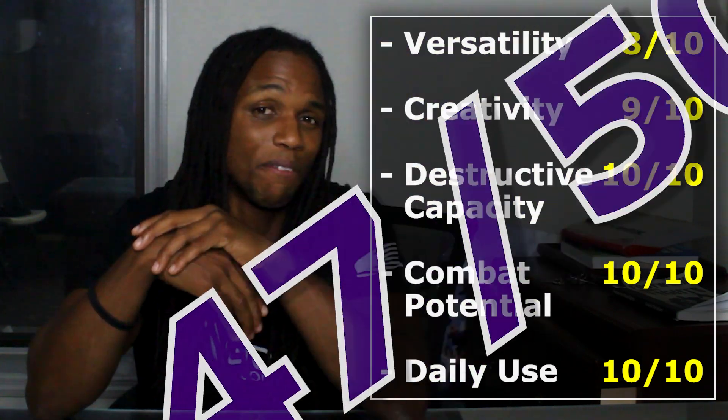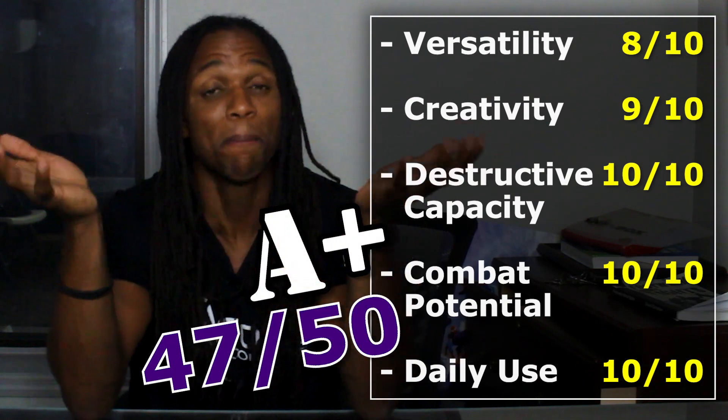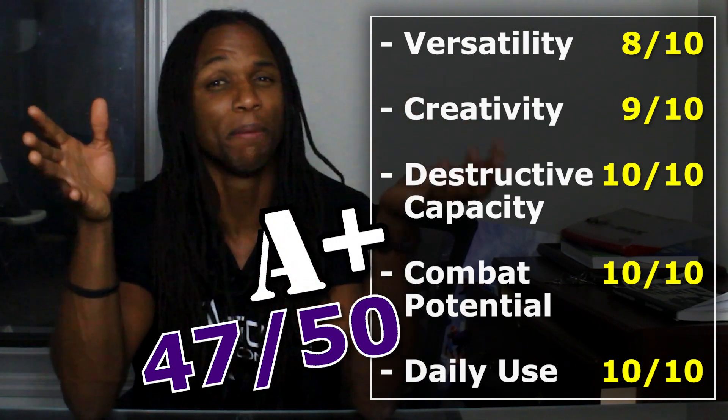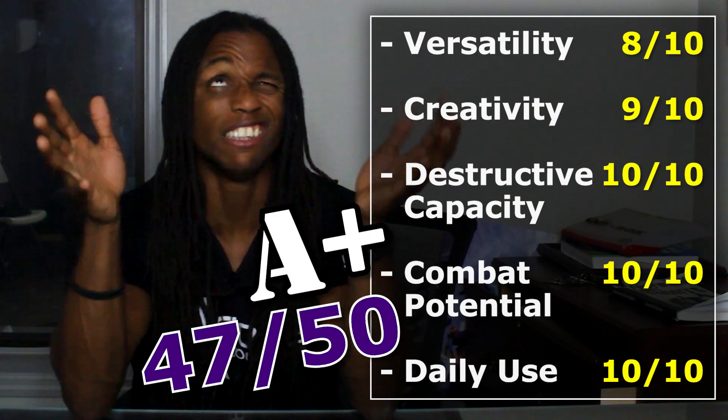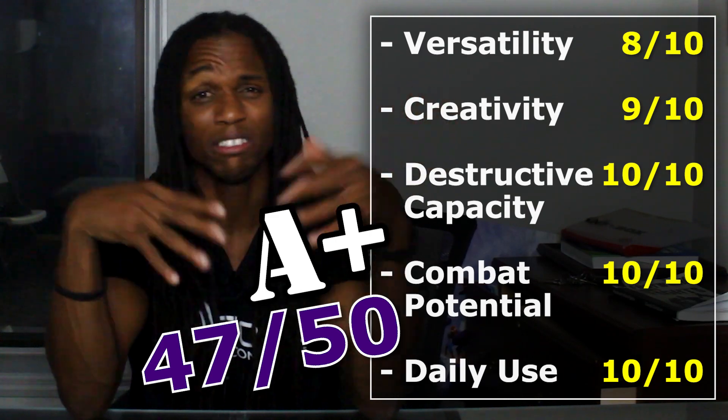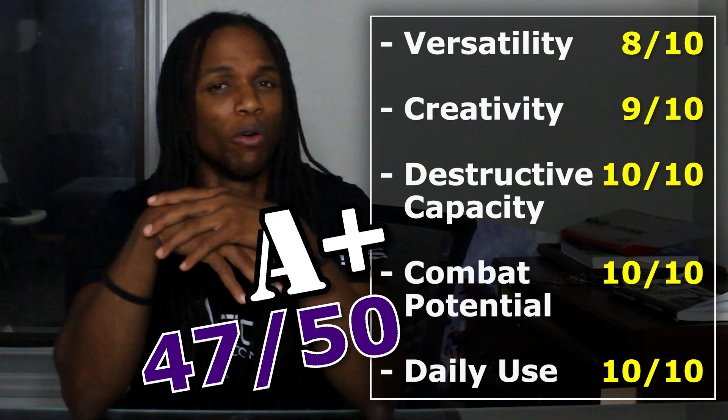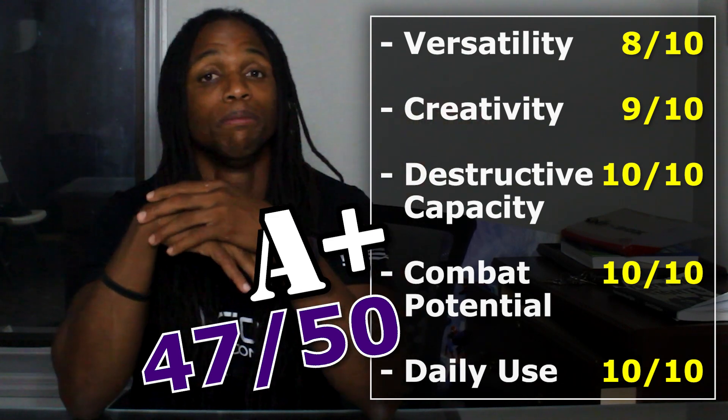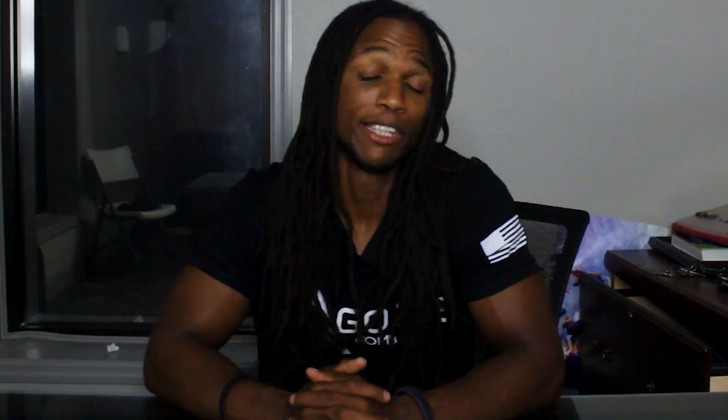That brings our score to a 47 out of 50, which is an A+. To me personally, it's one of the more top-tier abilities — I'd say it's in the ballpark of maybe top 10, at least that's how I feel about it. It getting an A+ doesn't really surprise me. If you feel differently, let me know in the comment section below. Thank you so much for watching this video to the very end. On screen now will be part two, as well as my teleportation video if you want to see more. Please subscribe to the channel — I'd love you forever. Until next time, peace.